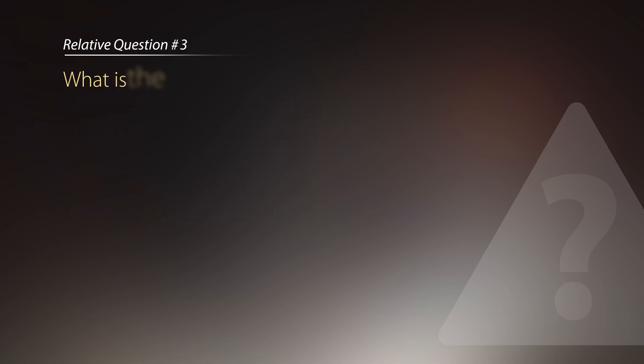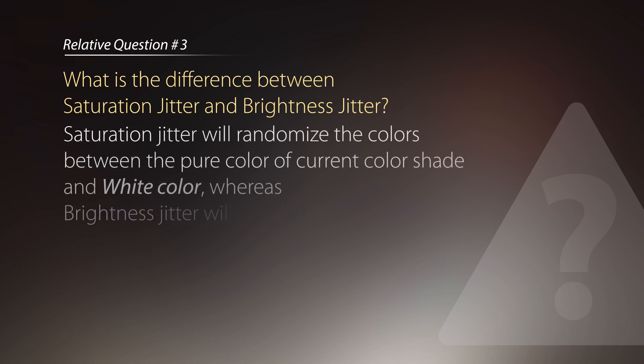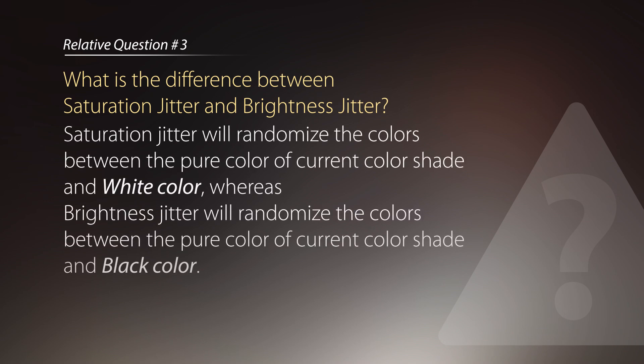The last question: what is the difference between saturation jitter and brightness jitter? Saturation jitter randomizes colors between the pure color of the current shade and white. Brightness jitter randomizes colors between the pure color of the current shade and black.